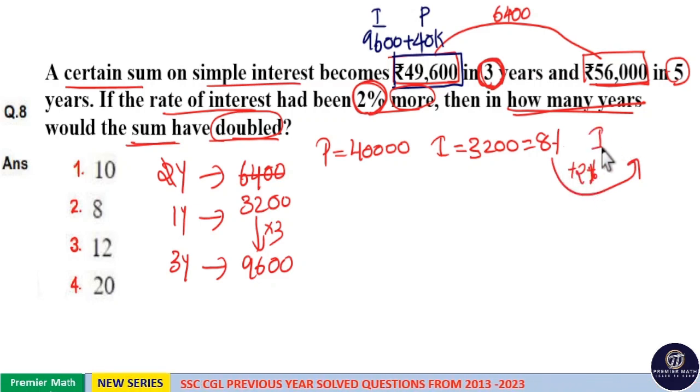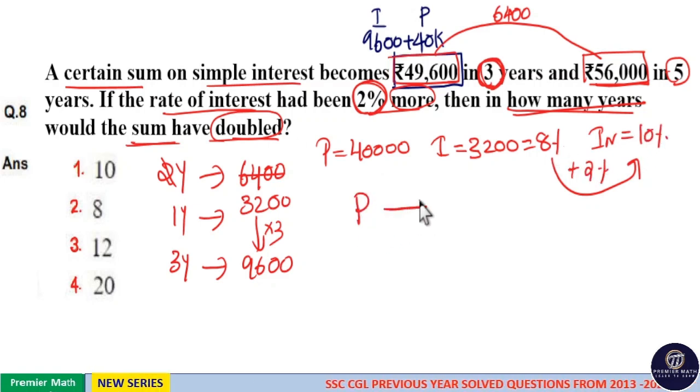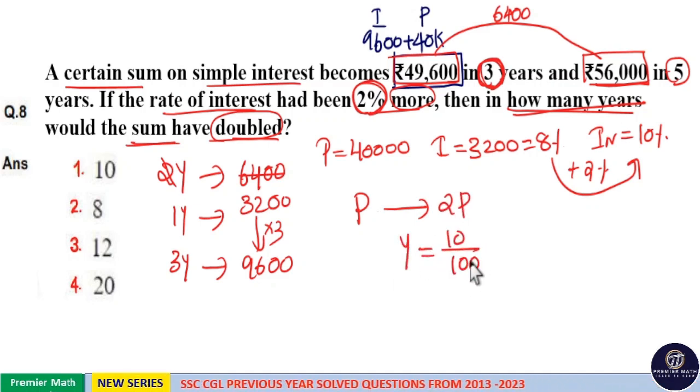The new interest rate is 8% + 2% = 10%. The sum P will become 2P in Y years at the rate of 10% per annum.